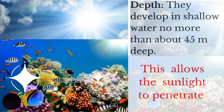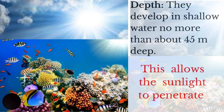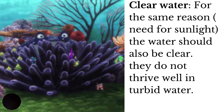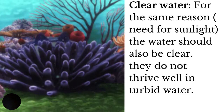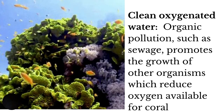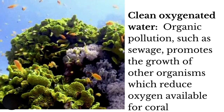Coral reefs also develop in shallow water — where the water is no more than about 45 meters deep — in order that sunlight will be able to penetrate. For sunlight to penetrate, the water also needs to be clear. Coral reefs will not thrive where the water is turbid. Another requirement is clean, oxygenated water.